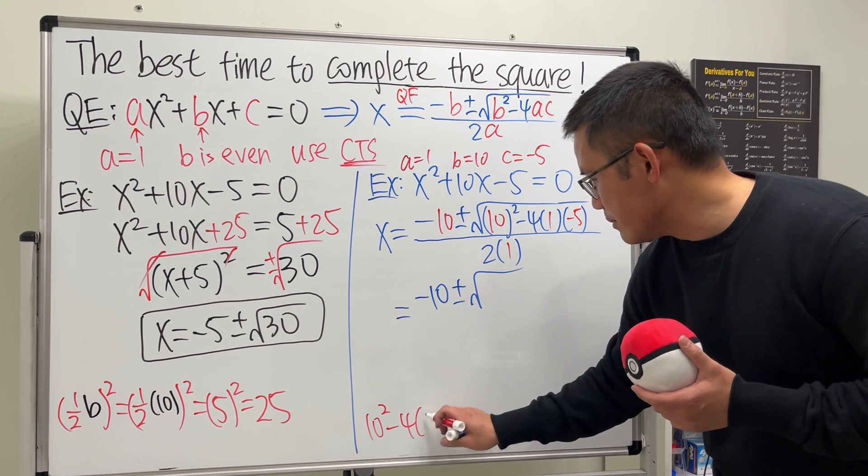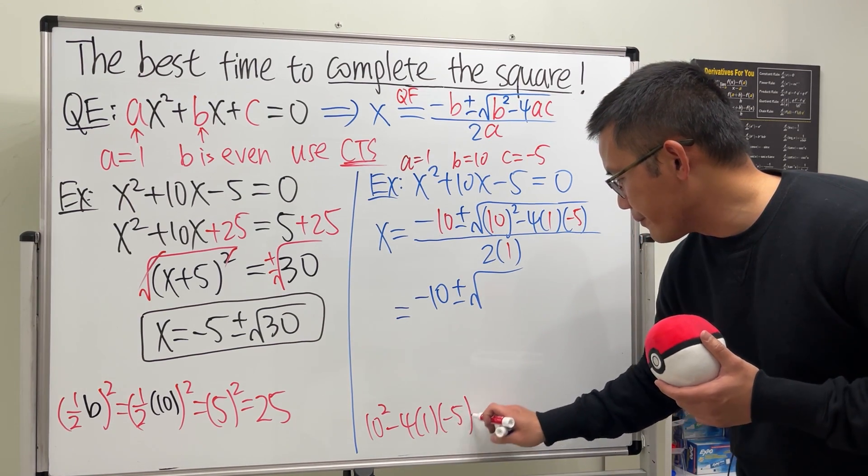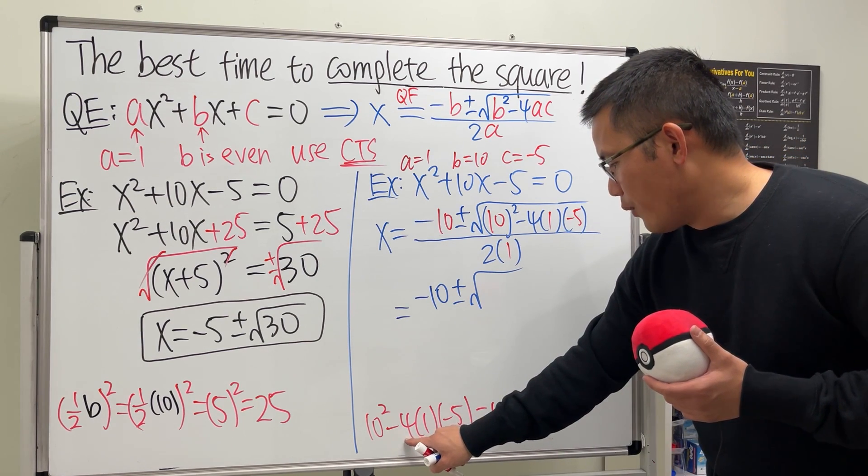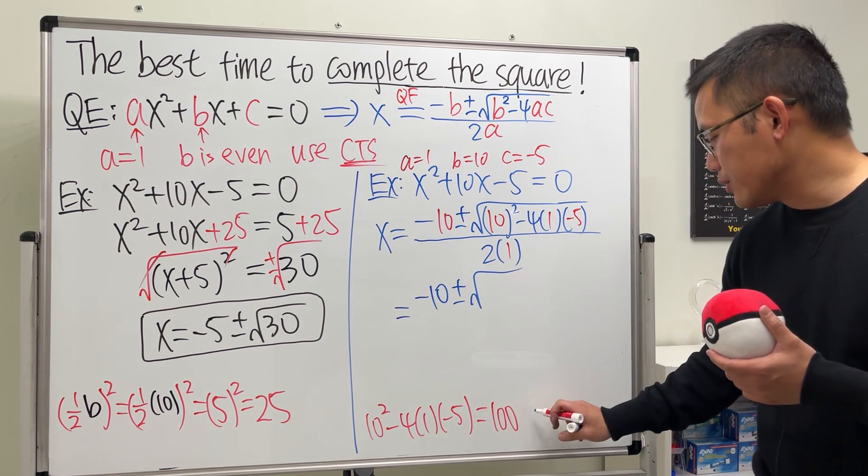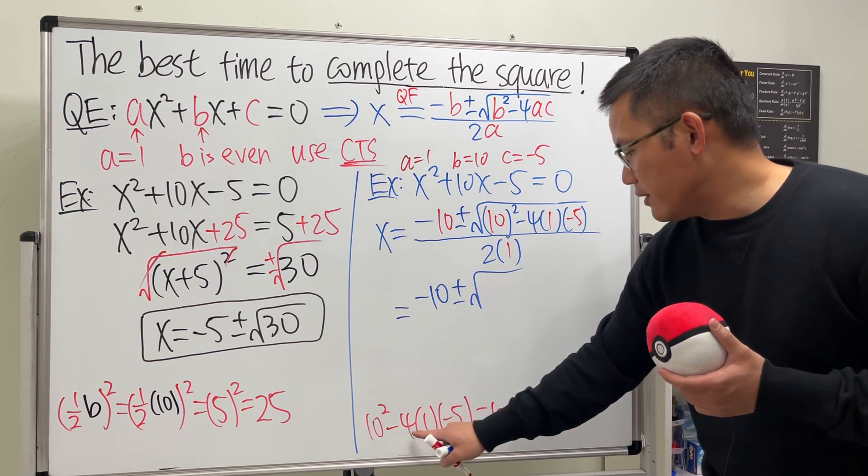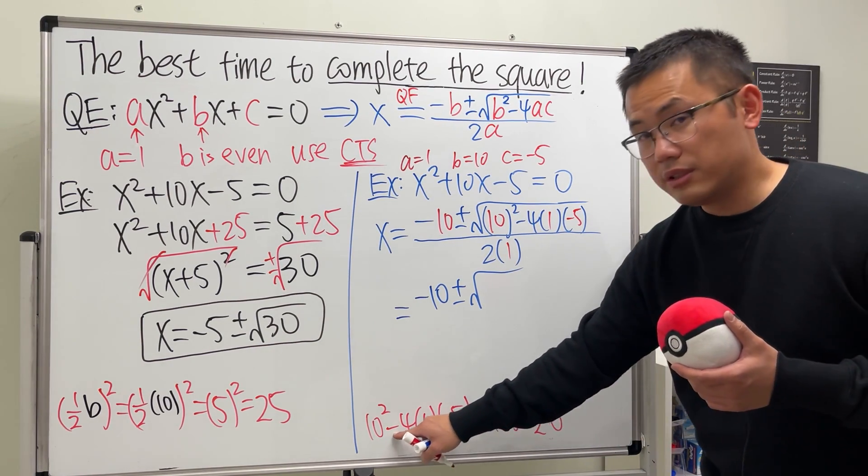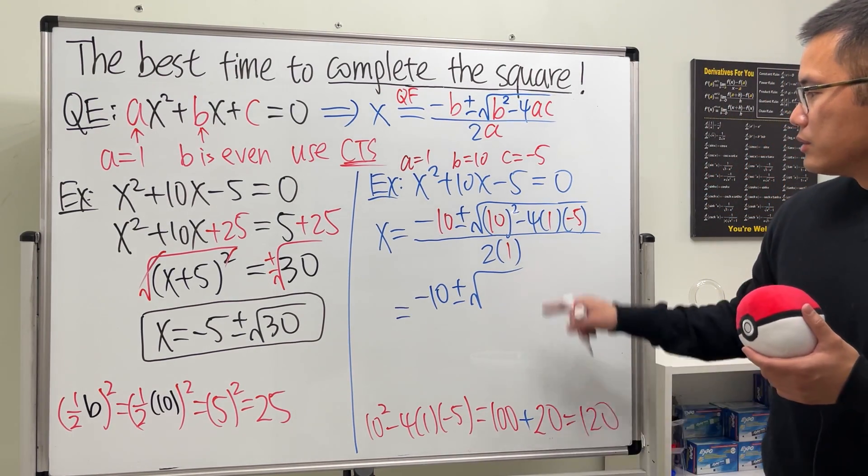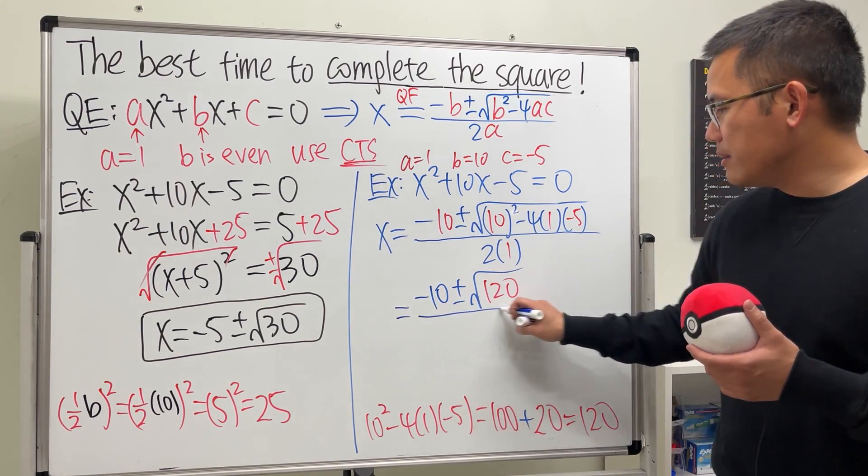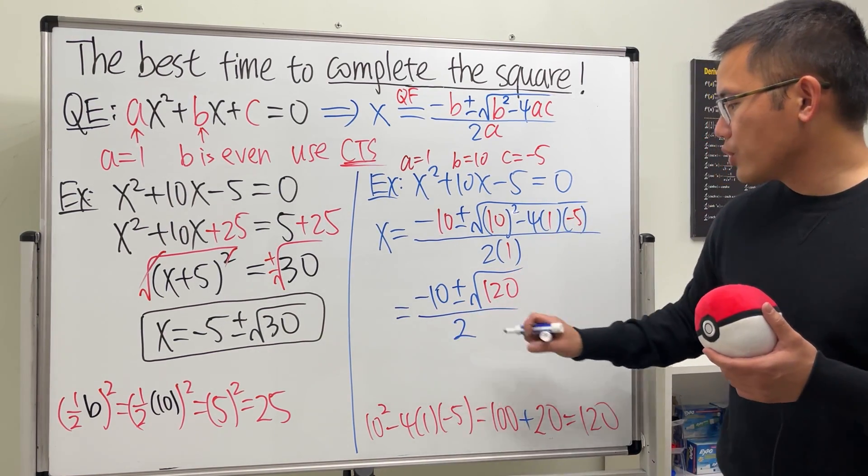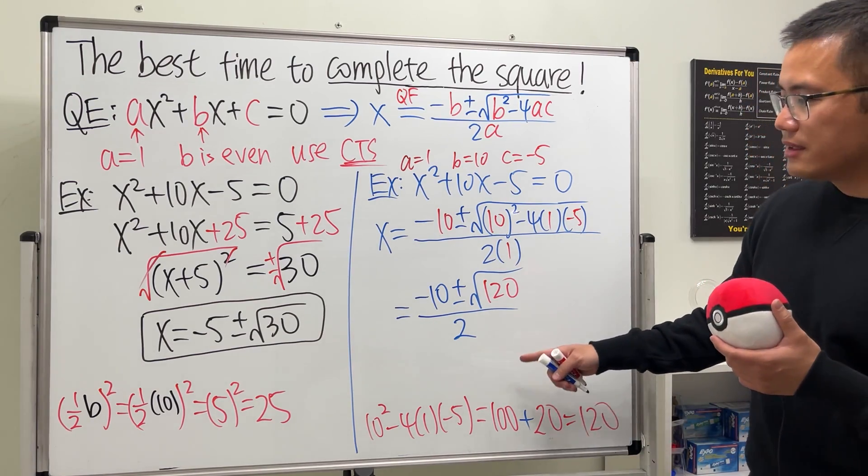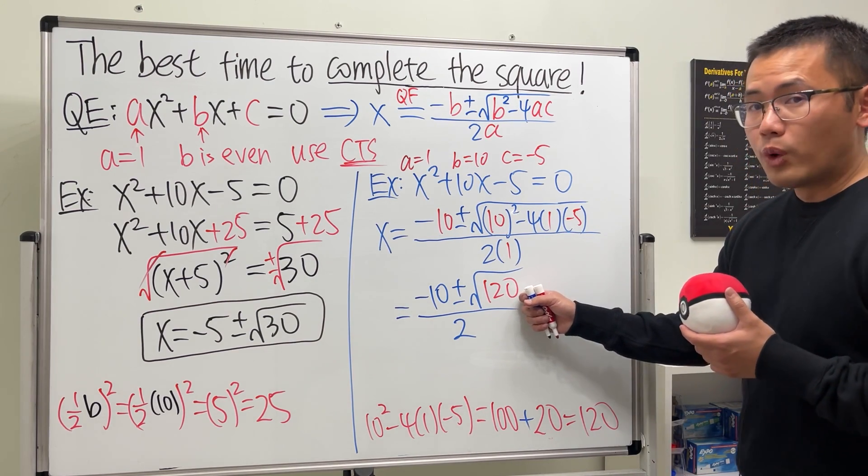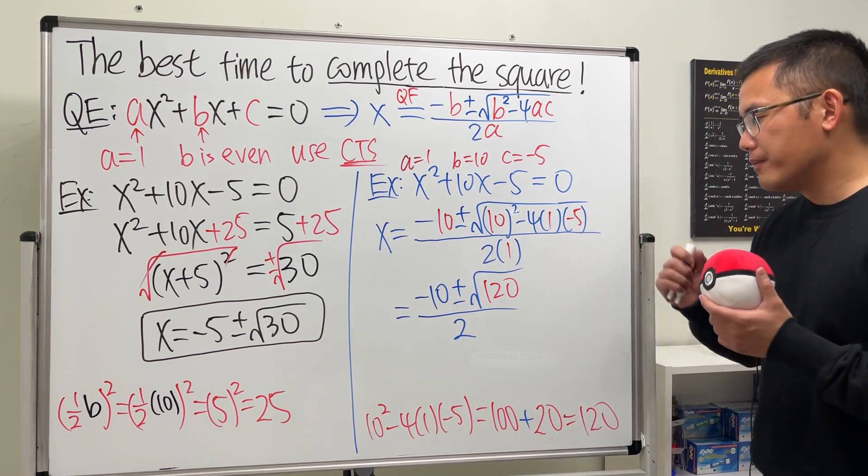10² - 4 times 1 times negative 5. 10² is 10 times 10 which is 100. 4 times 1 is 4 times 5 is 20. So we have 20, but negative times positive times negative, so it's just negative times negative, it's plus. So all together we get 120. So that's the number inside, and then divide it by 2. Hey, this answer does not look like that. What's wrong? Yeah, unfortunately for the √120 we actually have to break it down. How? Think about two numbers they multiply to 120 and one of them has to be a perfect square.